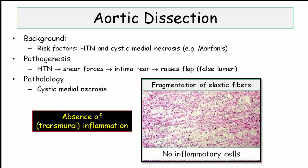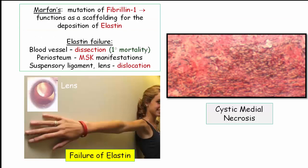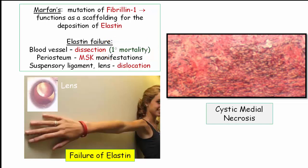Since both Marfan's and Ehlers-Danlos can cause cystic medial necrosis, let me contrast the two. In Marfan's, there is a mutation of the Fibrillin-1 gene. Fibrillin normally serves as a scaffolding for the deposition of elastin, so Marfan's is characterized by a failure of elastin. Elastin is found in the blood vessel wall — and this failure is expressed by aortic dissection, the number one cause of death in patients with Marfan's syndrome. Elastin is also found in the periosteum of bones, where its failure contributes to the MSK features of Marfan's.